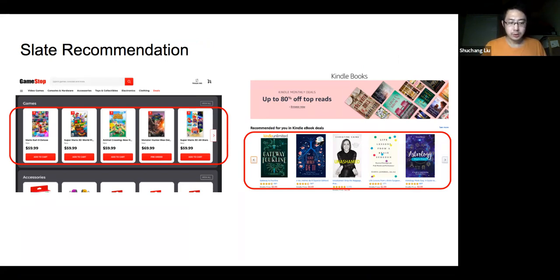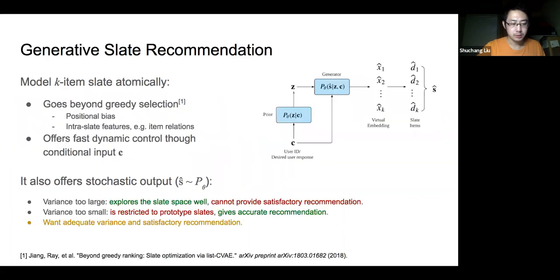Compared to traditional recommendation that provides arbitrary length ranking lists, slate recommendation usually focuses more on the intra-list features like positional bias and item relations. In this scenario, it is difficult for common learning-to-rank solutions to model these features under the enormous arrangement space because of their discriminative and greedy nature.